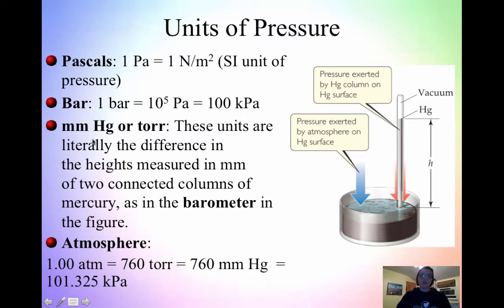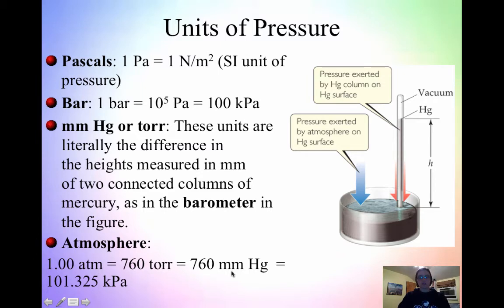We also have millimeters of mercury, or torr — these are actually the same thing; it's just the difference in measuring the height of mercury in a barometer. Atmospheric pressure is one atmosphere, or 760 torr, or 760 millimeters mercury, or 101.325 kPa.